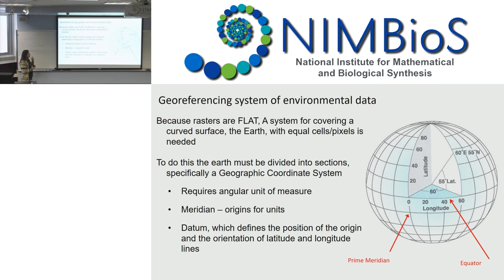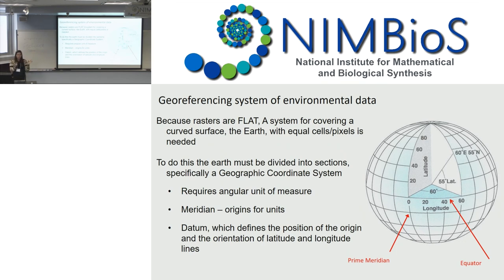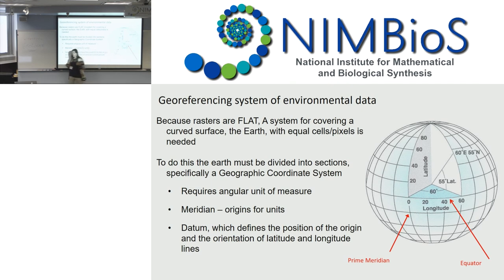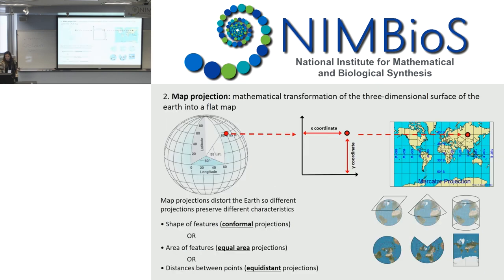The georeferencing system is really important because ultimately we're trying to take this globe — which is a circle — and flatten it out into a flat surface to put into our model. You can't do that unless you first take your circular surface, cut it into portions, and then project it into a flat surface. To do that, we need a geographic coordinate system — some origin upon which we put numbers, like the prime meridian and equator when using lat-long. Once we have that geographic system, we then have to project it with a map projection.